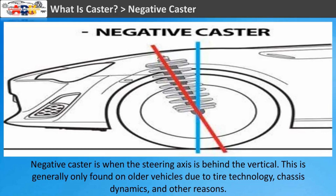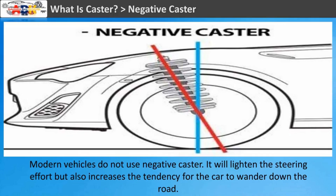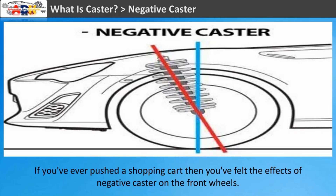Negative caster is when the steering axis is behind the vertical. This is generally only found on older vehicles due to tire technology, chassis dynamics, and other reasons — modern vehicles do not use negative caster. It will lighten the steering effort but also increases the tendency for the car to wander down the road. If you've ever pushed a shopping cart, you've felt the effects of negative caster on the front wheels.